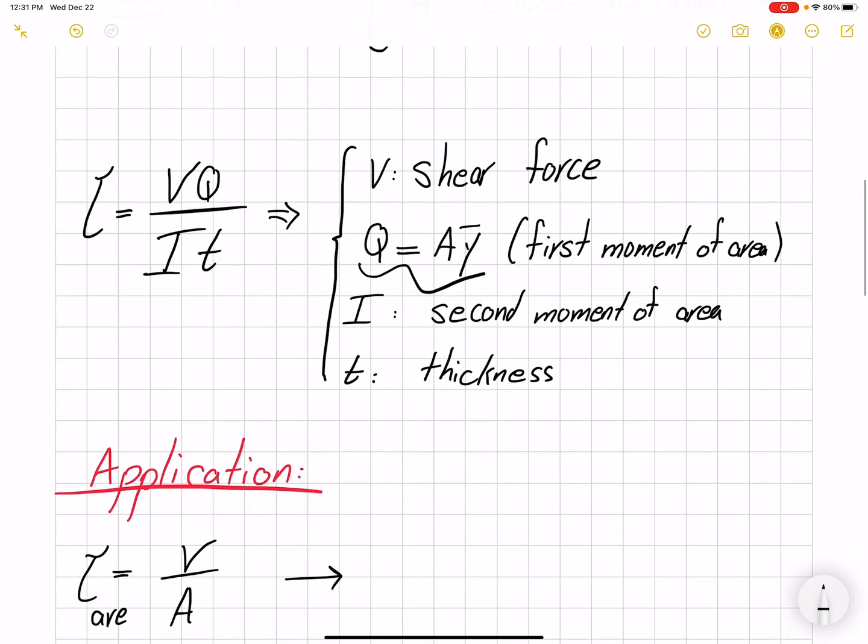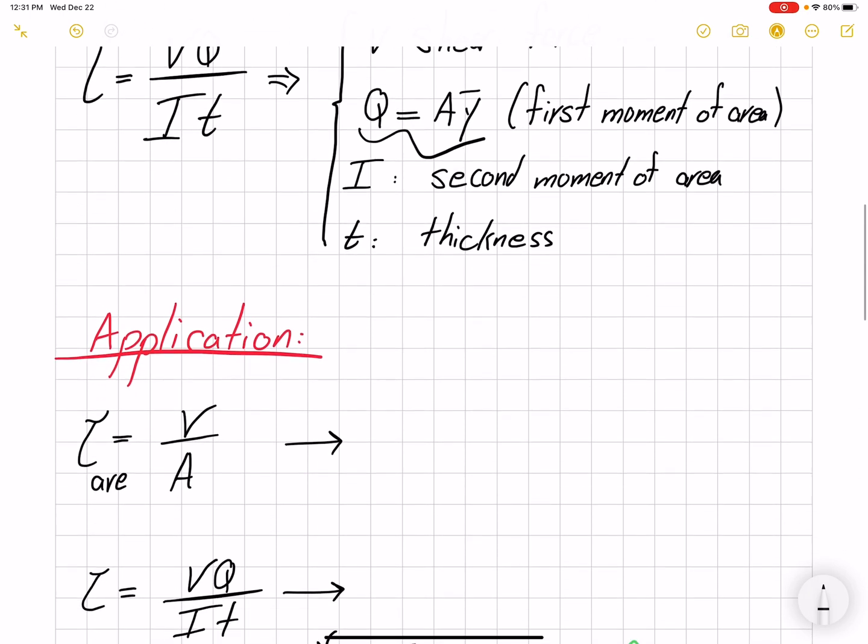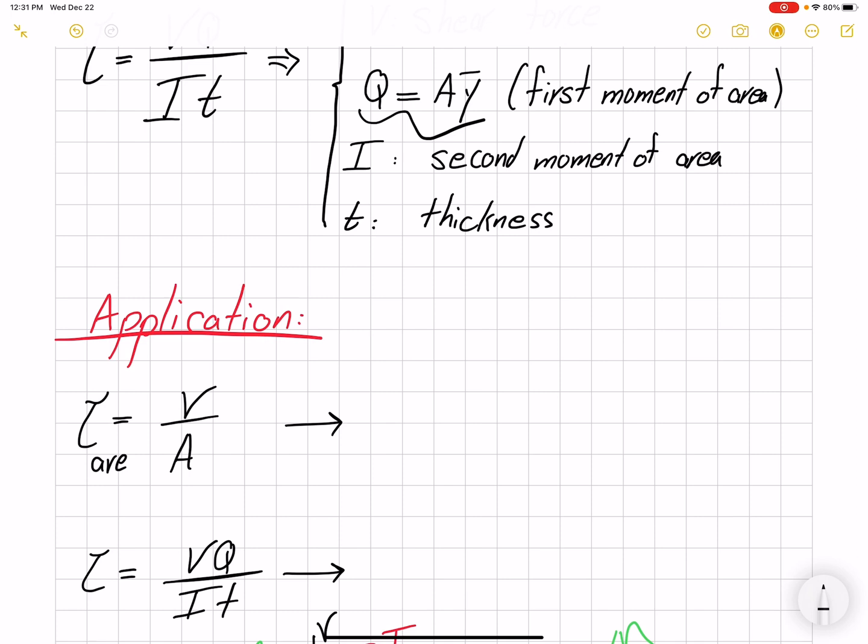But when do we use each? So if you're interested in finding the deformation, the equation tau equals G gamma, and that would be the shear deformation, then you can use the average value of shear stress.